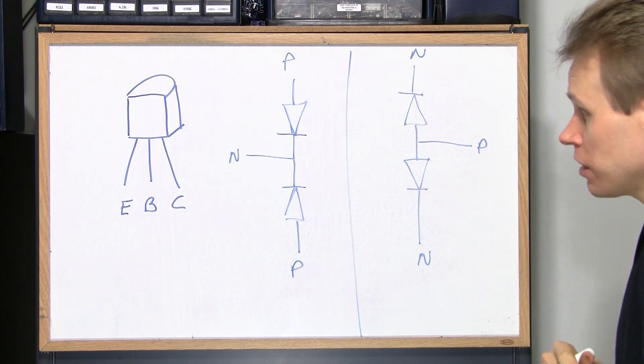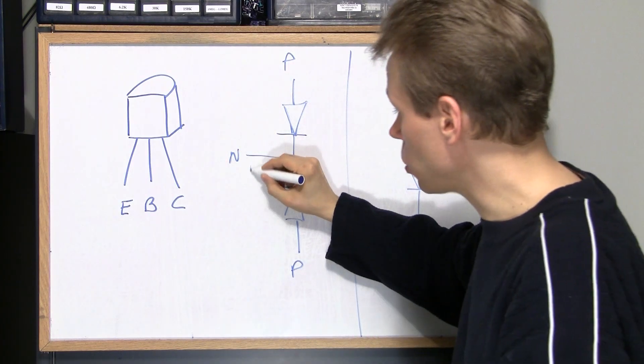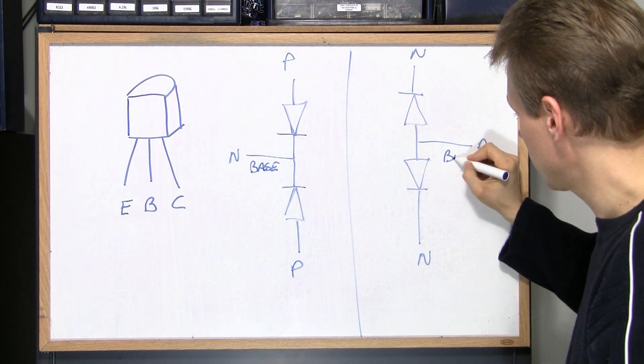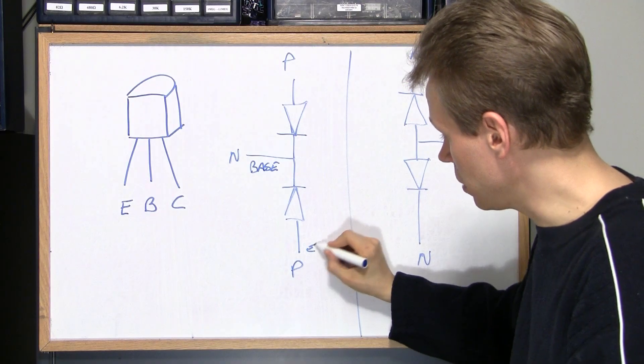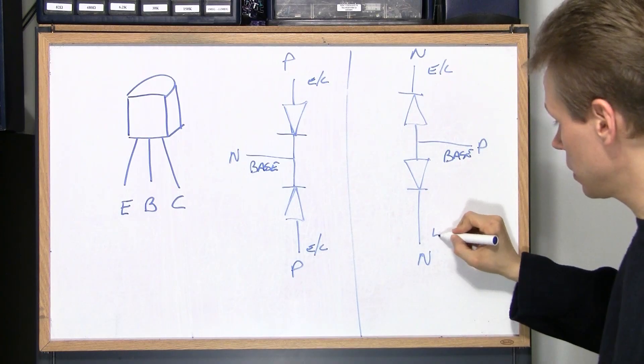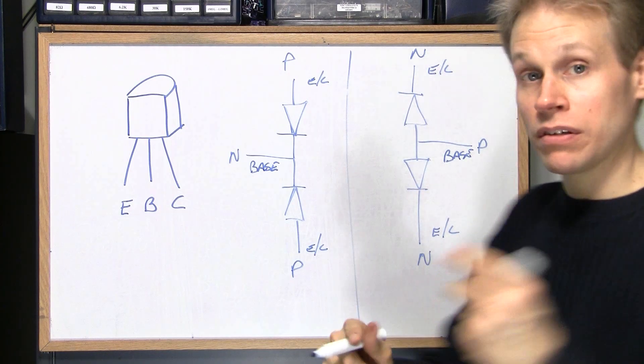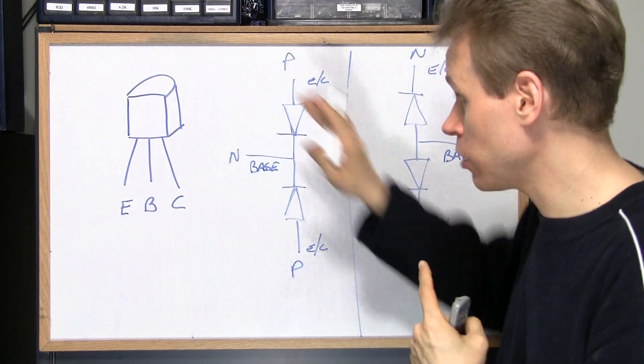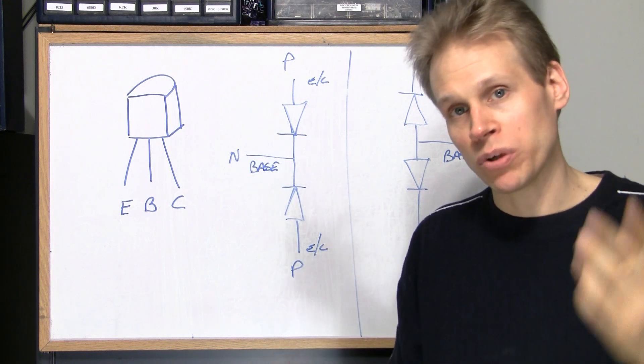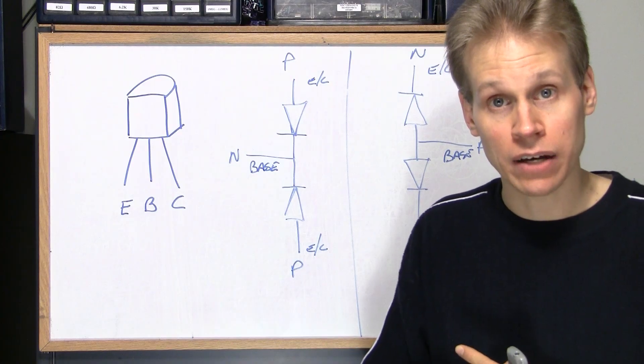Now how your diode checker checks these transistors is just like this. This lead is always the base. These leads can be either the emitter or collector. So what you do is you take your diode checker which is going to test a normal transistor. It's going to look just like a normal diode with between 0.6 and 0.7 of a volt forward. You'll see that on your diode checker.